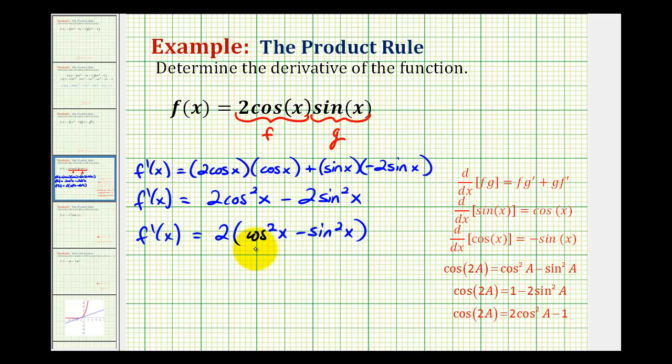Now in this form, you may recognize the identity that we can use. Be careful, this is not a sum, so it's not equal to one, but it is equal to cos(2x) using the double angle identity here for cosine.